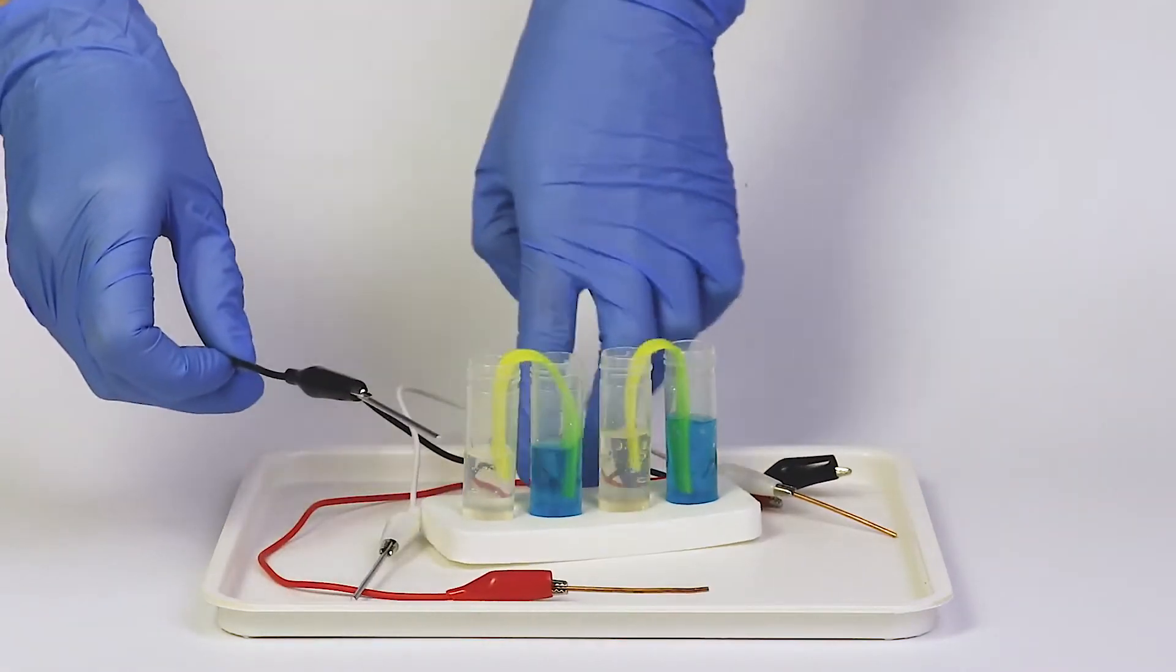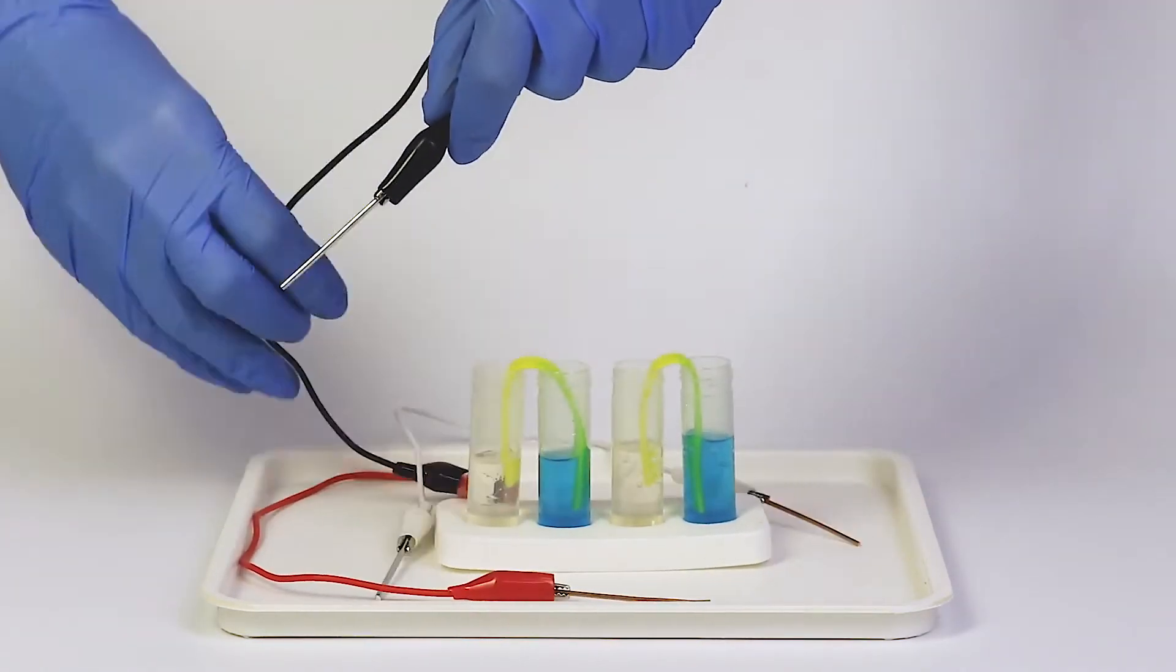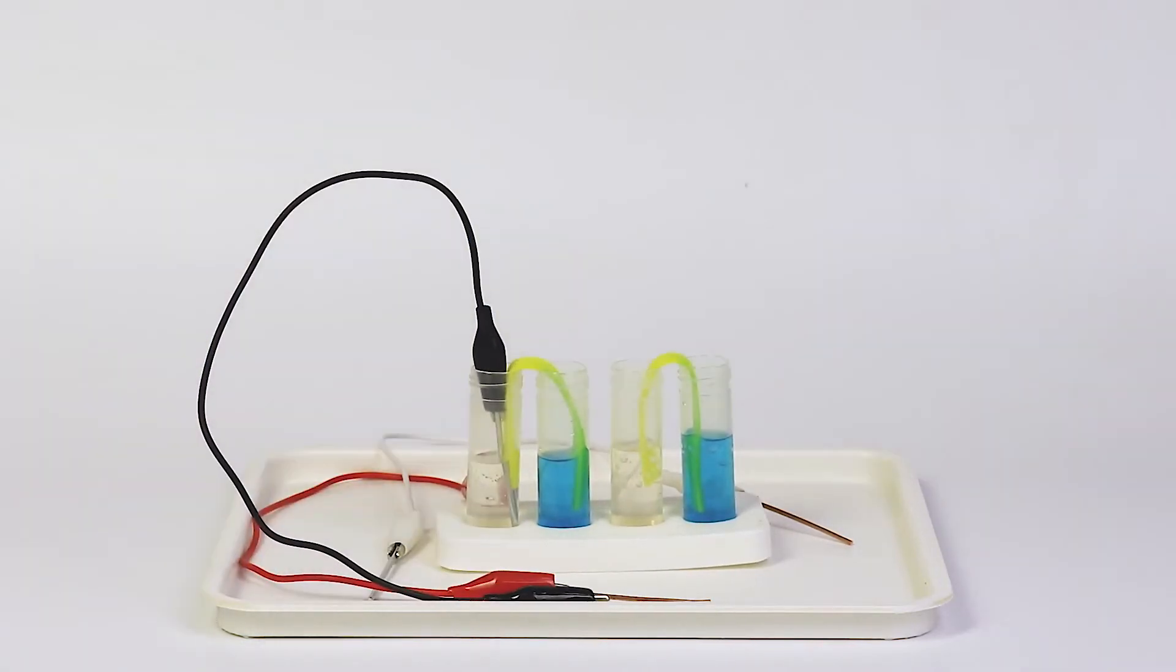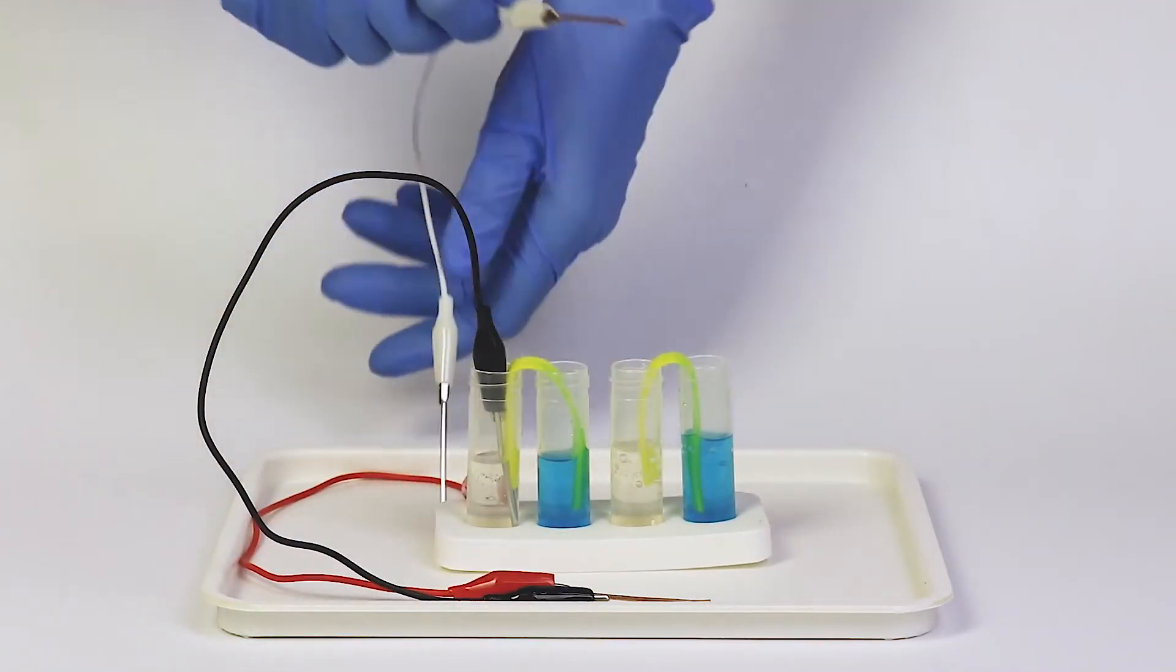Insert the zinc rod on the black wire into the first vial. Now, insert the metals on the white wire,